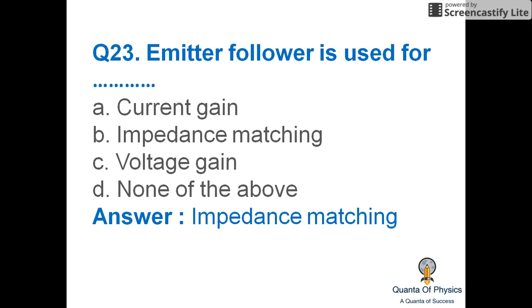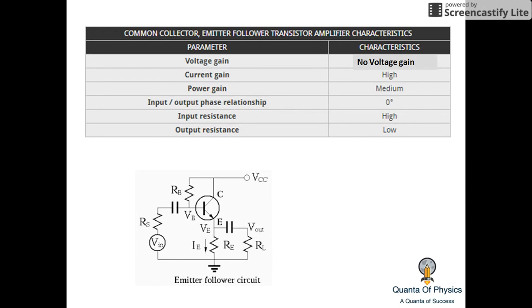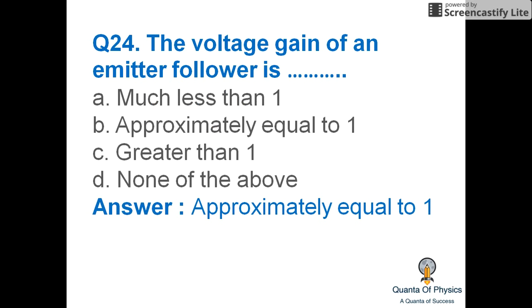Emitter follower is used for impedance matching. The characteristics of an emitter follower: voltage gain is approximately 1 (no significant voltage gain), current gain is high, power gain is medium, input-output phase relationship is 0°, input resistance is very high, and output resistance is very low.